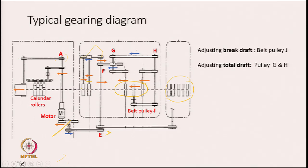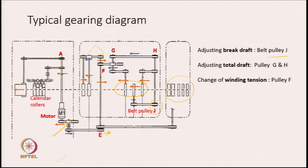Now in this machine, to adjust the brake draft, belt pulley G is the change pulley we use. If we increase or decrease the diameter of this pulley, the speed of the middle roller is going to change and as a result the brake draft is going to change. When you want to adjust the total draft, there are 2 pulleys — G and H.